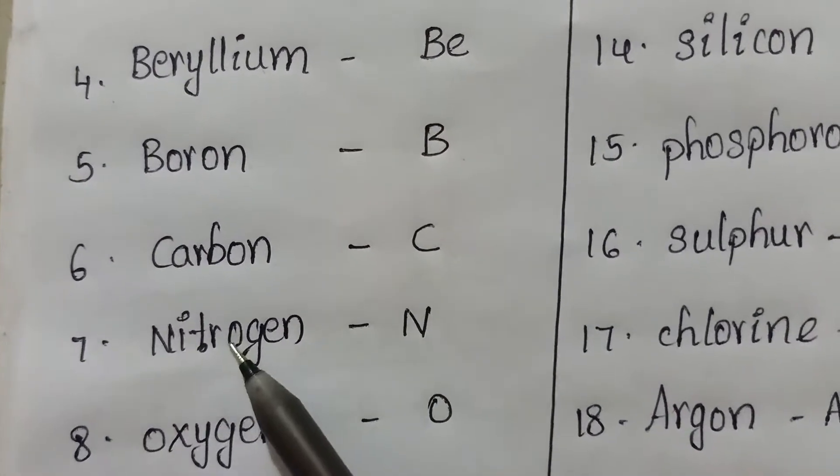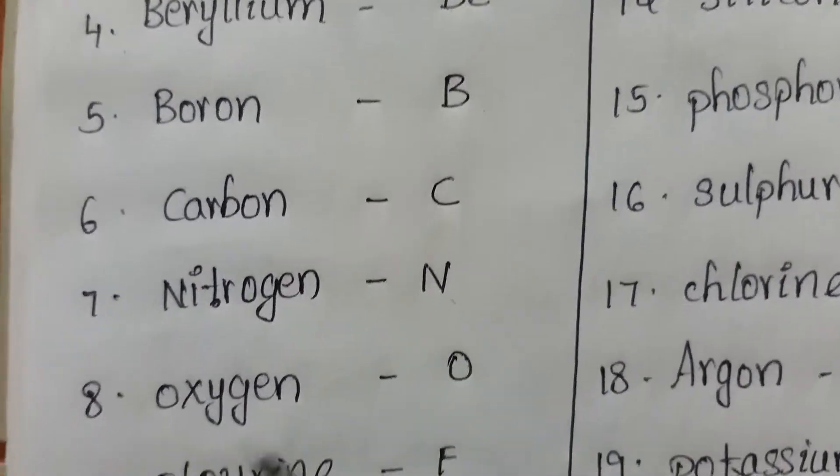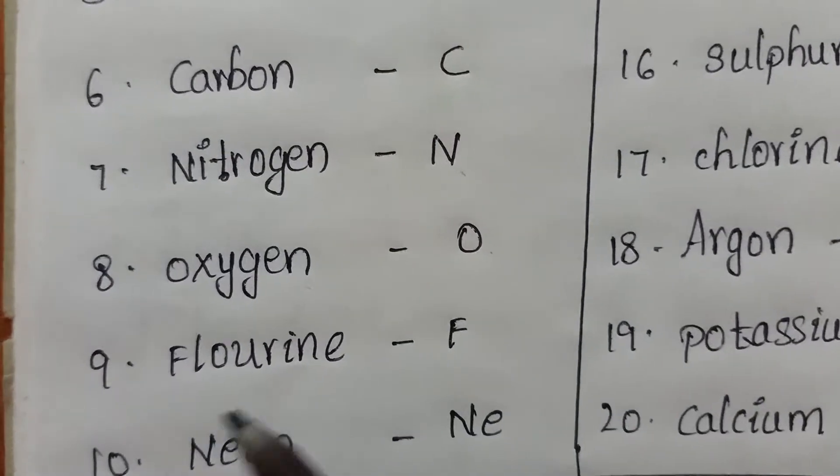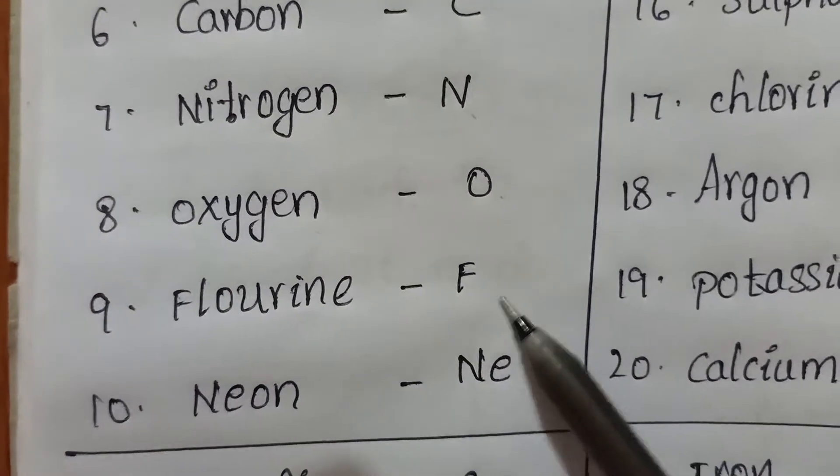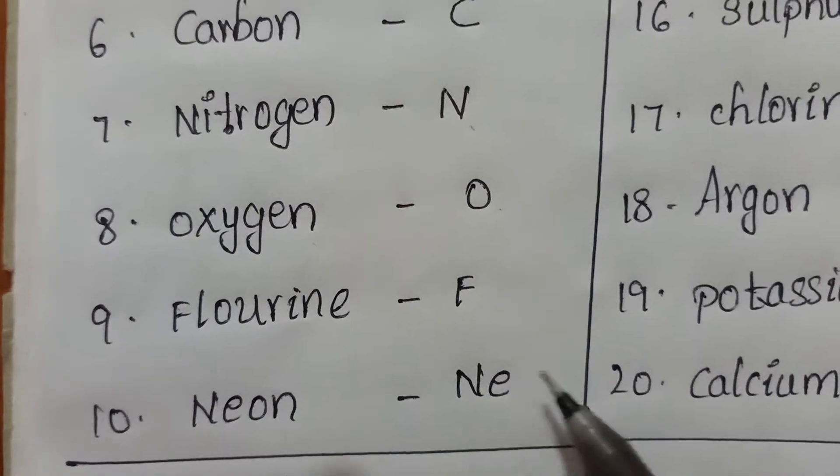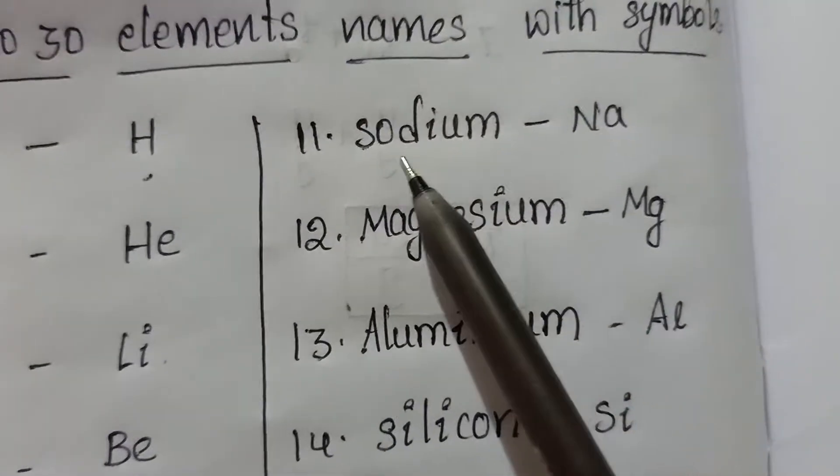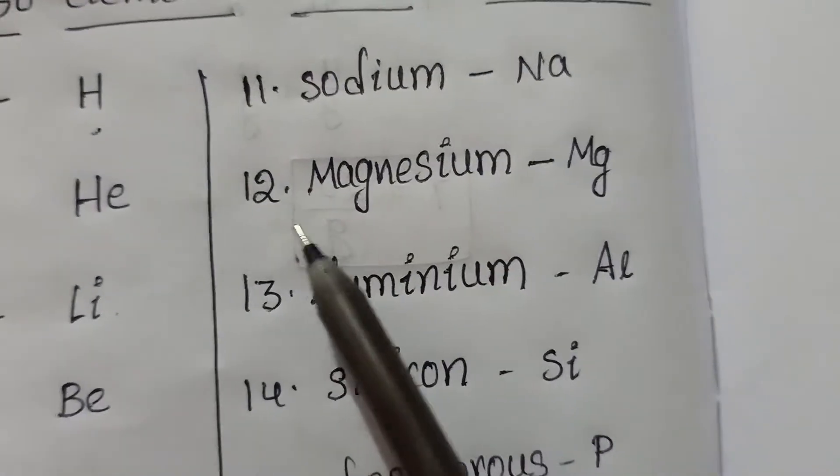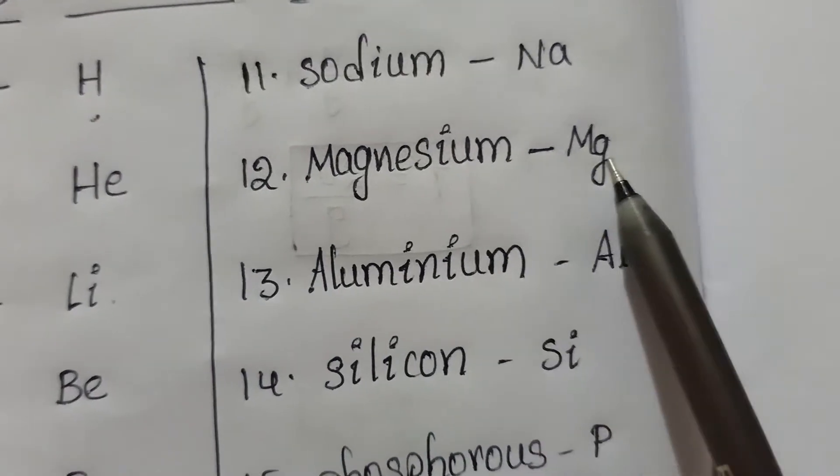Seventh one, nitrogen, symbol N. Eighth one, oxygen, symbol O. Ninth one, fluorine, symbol F. Tenth one, neon, symbol NE. Eleventh one, sodium, symbol NA. Twelfth one, magnesium, symbol MG.